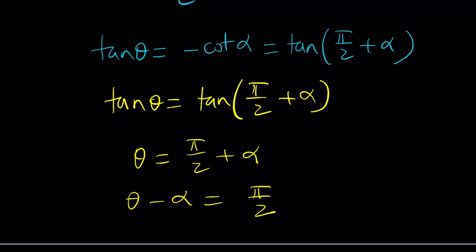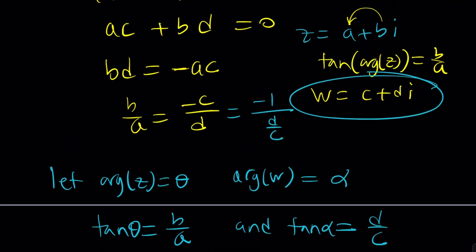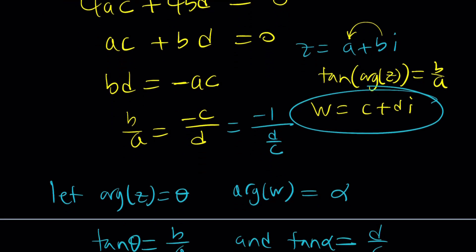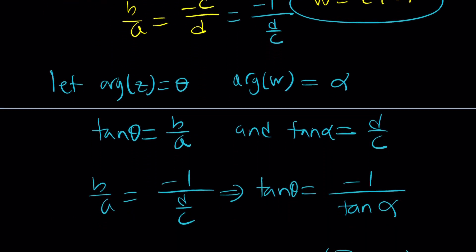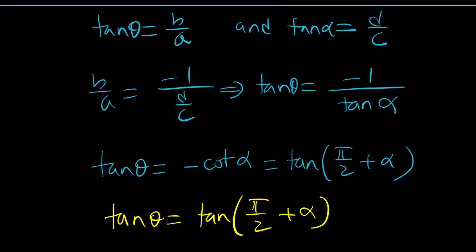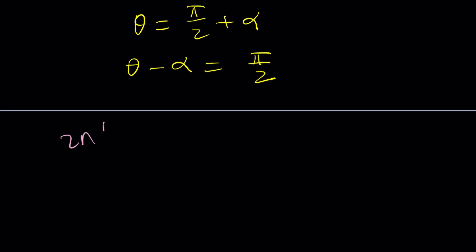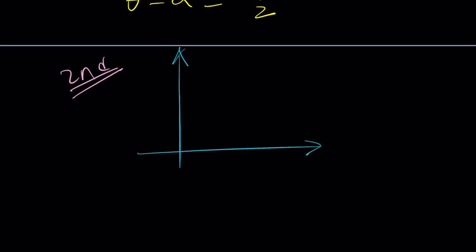It's a little bit brute forcey. Yes, we had to replace, but it almost always works. Replacing z with a plus bi and w with c plus di gave us this, and this also uses a lot of good trigonometry and some identities. Let's take a look at the second method, which is geometric, more visual.